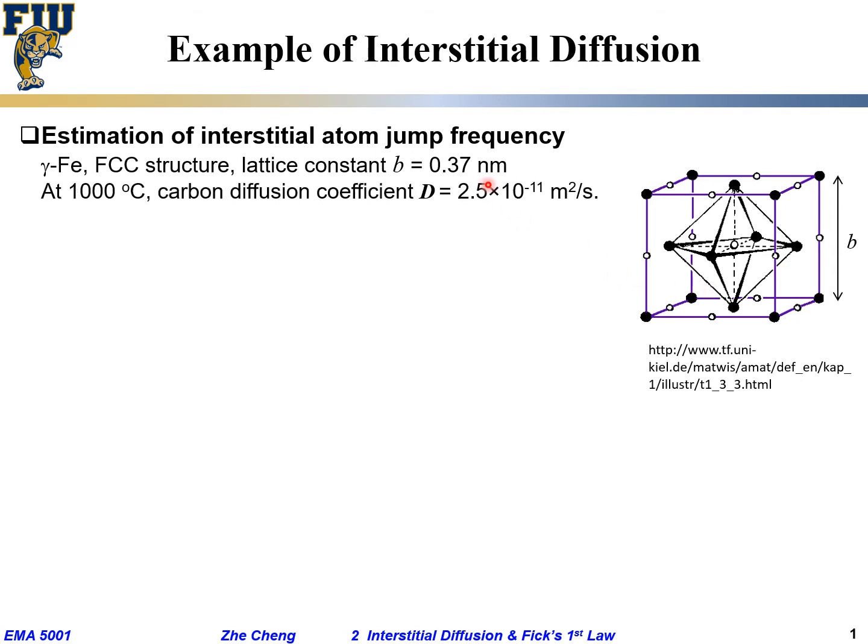If we know, at 1000 degrees C, pretty high temperature, the carbon diffusion coefficient, this interstitial carbon diffusion coefficient D = 2.5 × 10⁻¹¹ meter squared per second. We want you to estimate two things. One is, what's the successful jumping frequency, the gamma term?